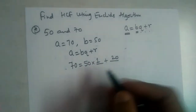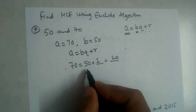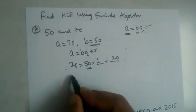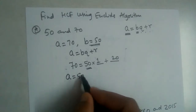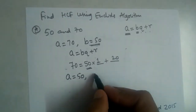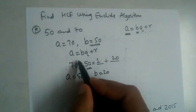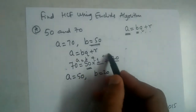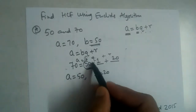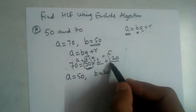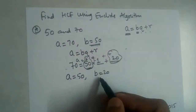We add 20 to make the right-hand side equal to 70, so the remainder is 20. Both sides are now 70. In the next step, the value of b becomes the new a, and the remainder becomes the new b.